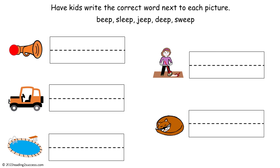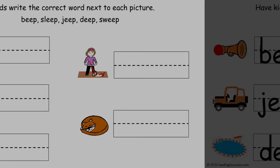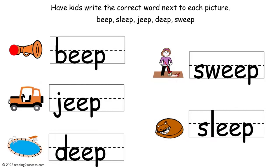In this activity, have kids write the correct word next to each picture. The choices are beep, sleep, jeep, deep, and sweep. And this is a completed example.